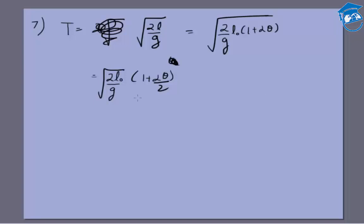The original time was root 2L₀ by G, so ΔT will be half of root 2L by G times root 2L₀ by G times αθ. And root 2L₀ by G is capital T, the original time period, so what we get is ΔT.